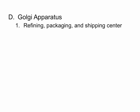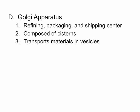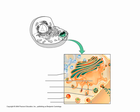The next organelle is the Golgi apparatus — a refining, packaging, and shipping center. It's composed of membranous sacs called cisterns, which kind of look like a stack of pancakes. They transport materials in vesicles from one cistern to another, packaging them and transporting to the next cistern. A vesicle is a membrane-bound sphere. Vesicles coming from the smooth endoplasmic reticulum enter a cistern where contents are refined or repackaged, then sent elsewhere in the cell.